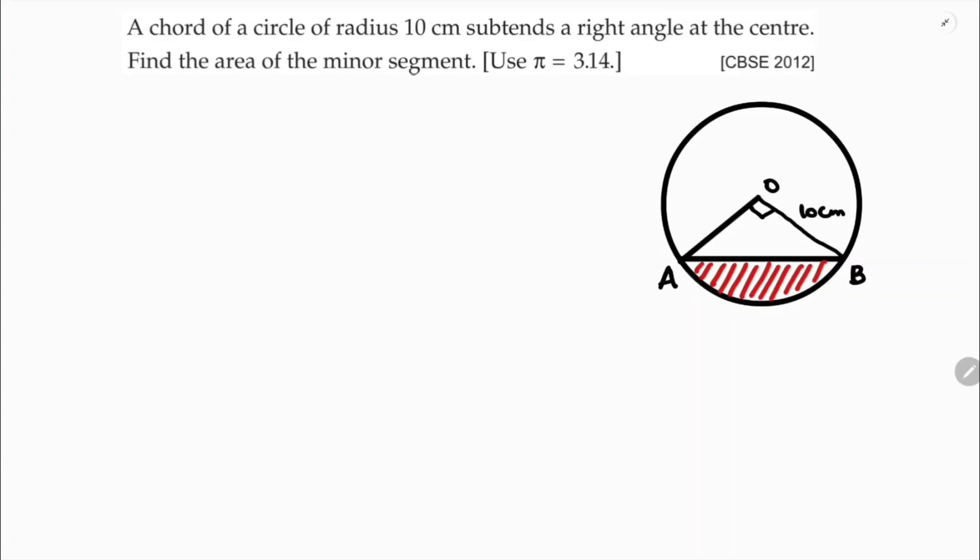Area of minor segment: I'll take the area of sector OAXB, area of sector minus area of triangle OAB. So you can consider area of minor sector, you can name it as OAXB.